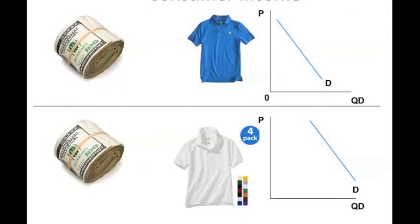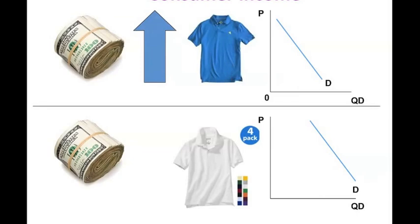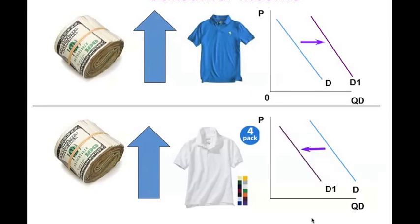Let's take a look at how this would look on a demand curve graph. A normal good for me is the Express for Men polo brand. If my income increases, I'm going to buy more of the Express for Men clothes — I will demand more at all price points. At the same time, if my income goes up, I will actually buy less inferior goods like the Faded Glory brand from Walmart, so my demand for the Faded Glory brand goes down. As our income goes up, we will buy more normal goods and less inferior goods.